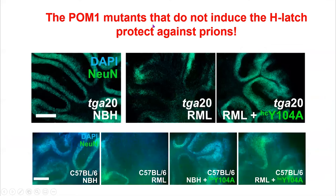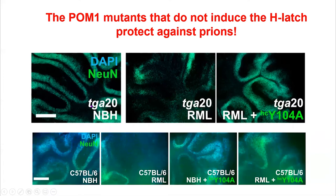What became really exciting was finding that the antibody mutant is actually an antiprion antibody — it protects against prions. In TGA20 brain slices treated with non-infectious brain homogenate, nothing happens; infecting with Rocky Mountain Laboratory strain prions completely destroys the slice within five weeks. However, treating the infected slice with the substituted POM1 antibody now protects it, blocking the neurodegeneration induced by prions.